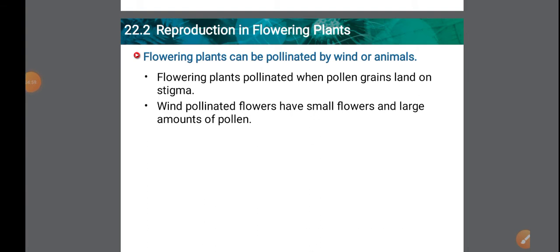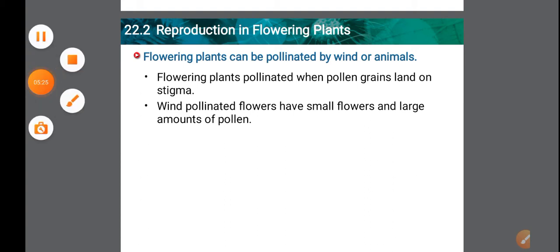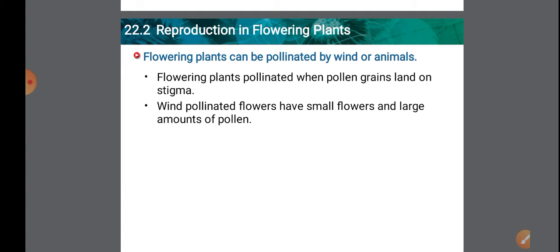When the anther is mature, it splits open and sheds pollen grains. These pollen grains are dispersed by various agents such as wind and water, so that they can be transferred to the stigma of another flower of the same species or the same flower. The transfer of pollen from anther to stigma is called pollination. Pollination takes place through wind, water, and insects.